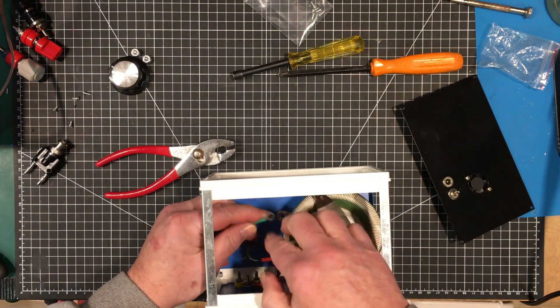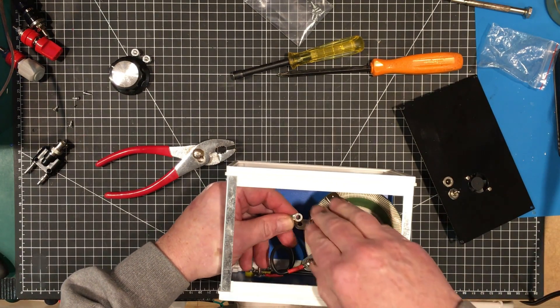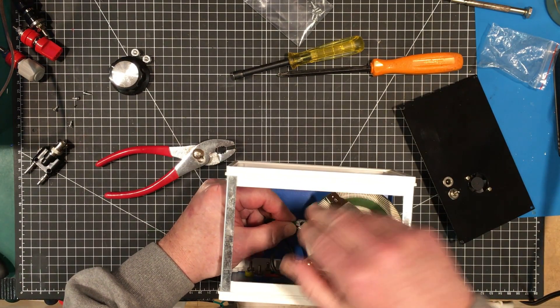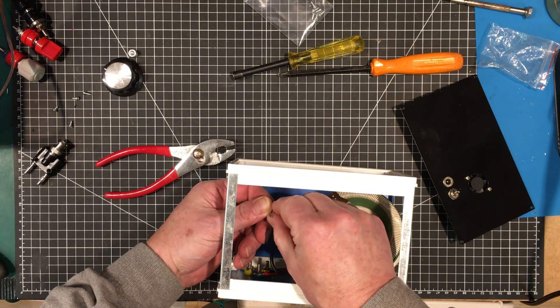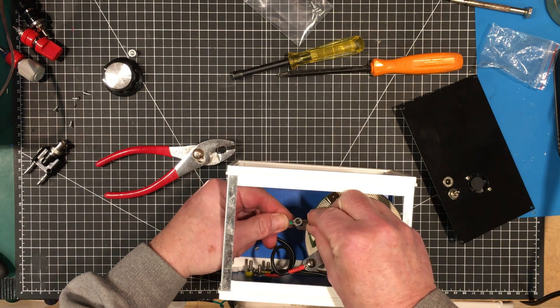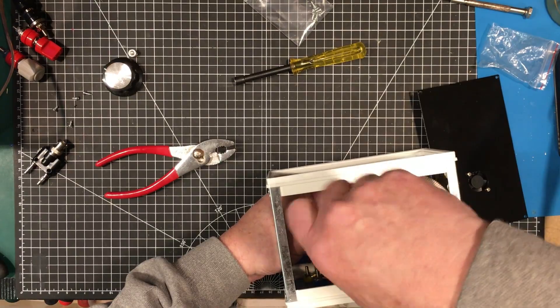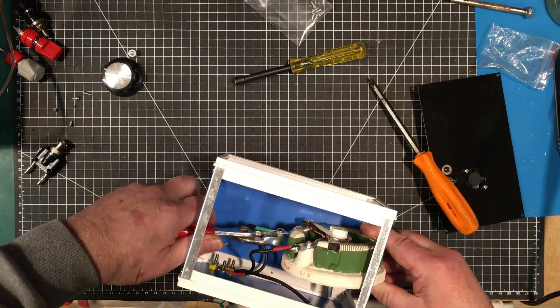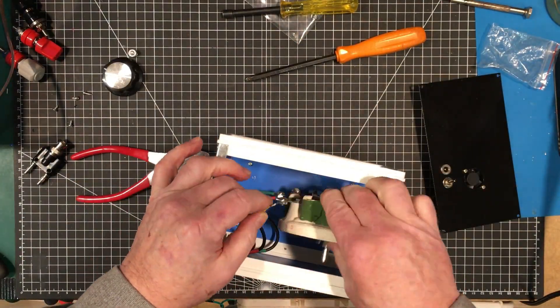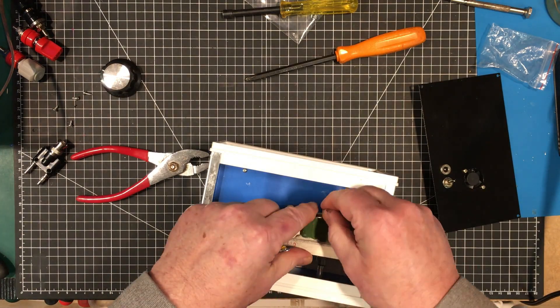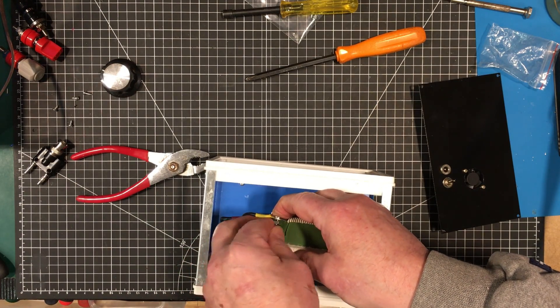This silicone wire is very very flexible, very nice. It strips very nicely and resists heat very well. Really nice stuff. I got this wire off Amazon, I'll leave a link to it down below.